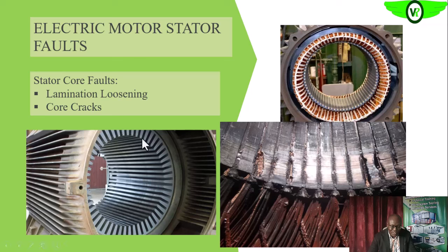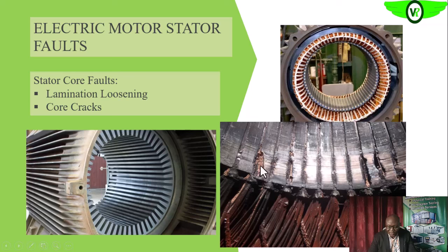The stator itself can also have physical faults. This is the yoke of the stator, which is the main structural part where the winding sits. As you can see, this is a clear case of rubbing of the rotor on the stator — the yoke has been damaged, and the winding is already shorted to either the rotor or the yoke.